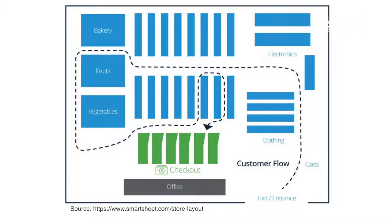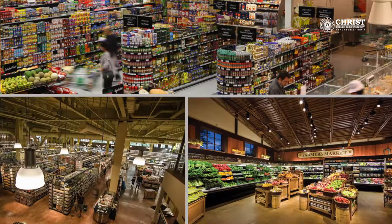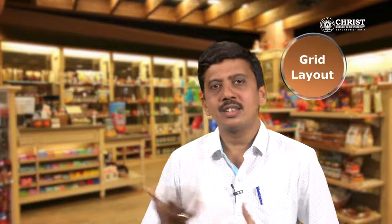Mainly this type of layout is used in grocery stores, drug stores, supermarkets and few department stores. The examples of a few Indian retail stores who adopt this kind of layout are Reliance Fresh, Big Bazaar, Spar, Moor, Neligris, and others.